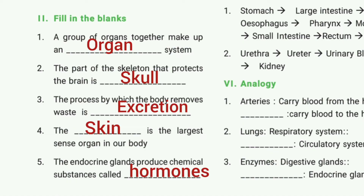Then fourth one: the blank is the largest sense organ in our body. The answer is skin. Then fifth one: the endocrine glands produce a chemical substance called blank. The answer is hormones.